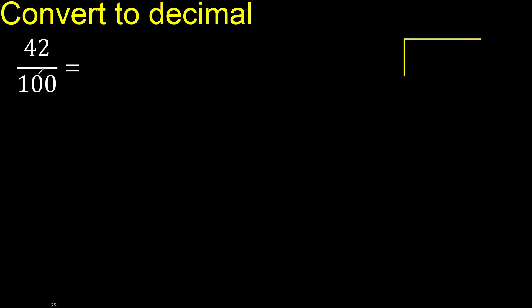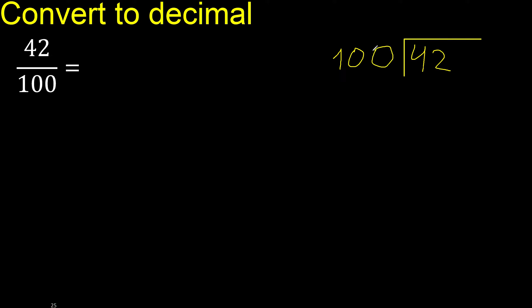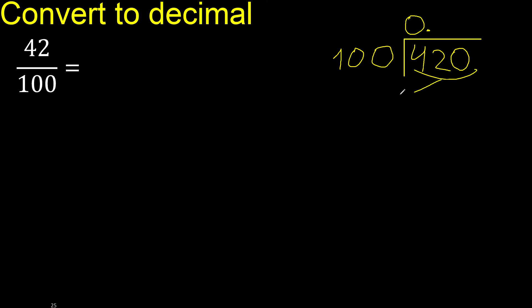42 divided by 100. 42 is less, therefore complete — always complete with 0. Here: 0 point. 42.0 is not less than 100.